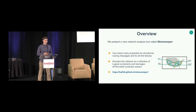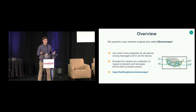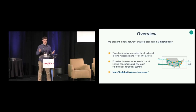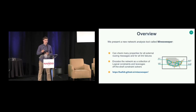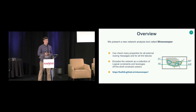Minesweeper was developed to overcome these limitations. It can check a number of properties of your network for all possible combinations of external routing messages and for all possible combinations of link failures. It does this by translating your network into a collection of logical constraints, which can then be solved by an off-the-shelf constraint solver. These tools have been developed over many decades to be very efficient at finding inputs that can violate constraints. It's available as open source software on GitHub, and we've used it to find bugs in real networks.